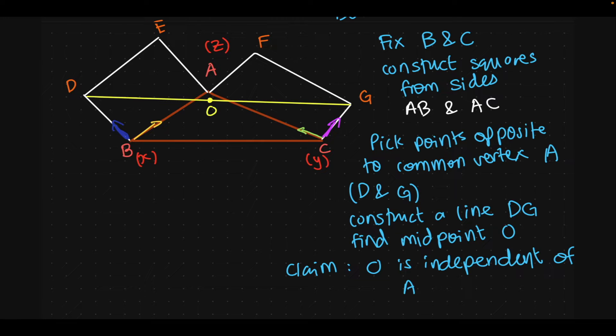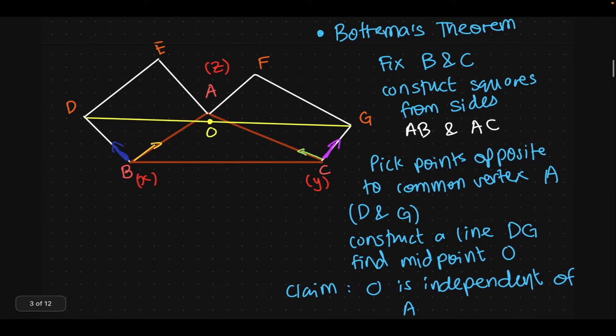Now, here's the claim of the theorem. The claim is that O is independent of A. Well, it's not such an obvious fact because the only real restriction we have is X and Y. But the degree of freedom is in Z, right? Z can move up, down, around, anywhere you want. But the theorem says that this point O will be fixed in place as if it were pinned to the wall by a nail.